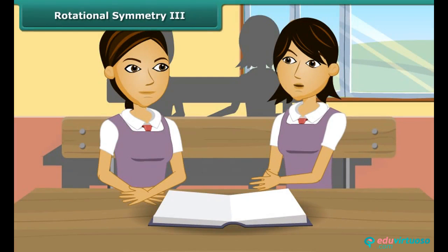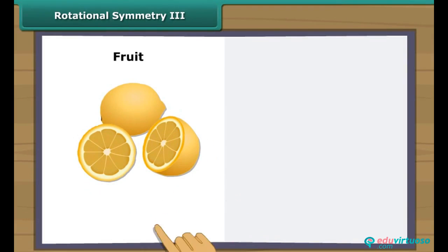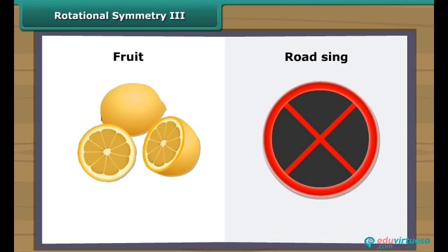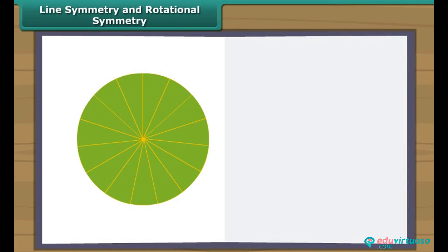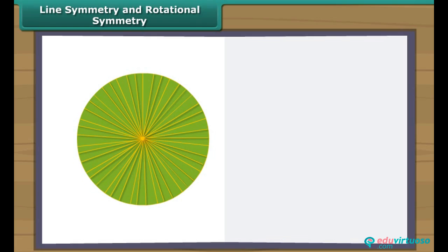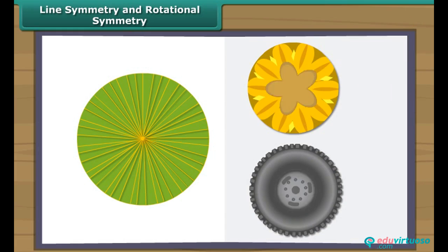Priya, can you tell the shapes around us which have rotational symmetry? Yes. When we slice certain fruits, the cross sections are shapes with rotational symmetry. There are many road signs that have rotational symmetry. Do you know which the most perfect symmetrical figure is? Is it a circle? Yes, the circle is the most perfect symmetrical figure. It can be rotated around its center through any angle, and at the same time it has an unlimited number of lines of symmetry. Observe these circle patterns — every line through the center forms a line of symmetry, and it has rotational symmetry around the center for every angle.